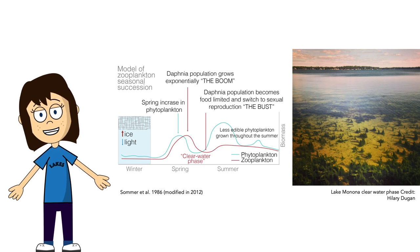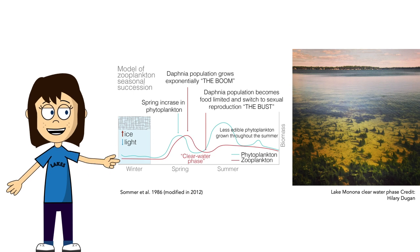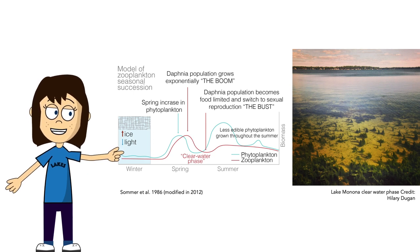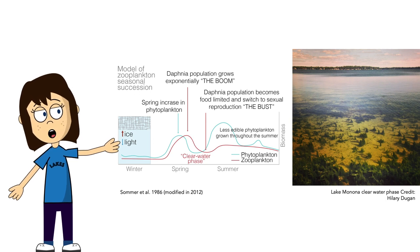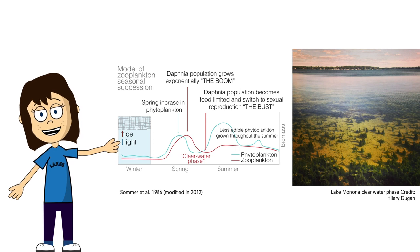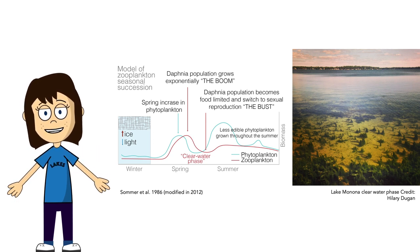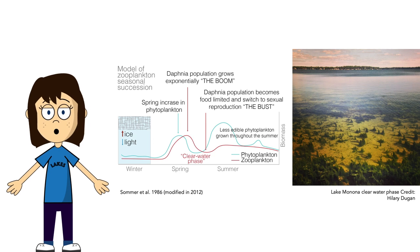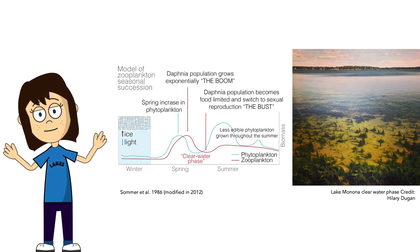That surge in zooplankton leads to what we call the clear water phase — a phase in spring where lakes undergo water quality that's exceptionally clear. Here's a photo taken from Lake Monona a few years ago where you can see right to the bottom of the lake. This is rare if you think about what the water quality looks like in summer. These community interactions — between phytoplankton and zooplankton — have direct impacts on water quality.